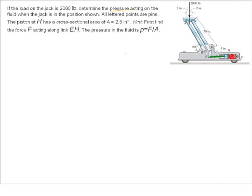Now this is a frames and machines problem, and remember with those, you always have to think about the different free-body diagrams you want to draw. I'm going to do my givens and finds, and we'll get started. So we're given that the area of that piston is 2.5 square inches, and we're also given the force is 2,000 pounds.